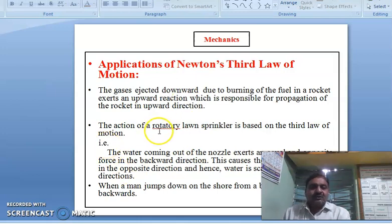The action of the rotary lawn sprinkler, you know sprinkler, it is utilized to sprinkle the water on the ground. Let's discuss again. The action of a rotary lawn sprinkler is based on the third law of motion. See how the water coming out of the nozzle exerts an equal and opposite force in the backward direction. Because of this what happens, this causes the sprinkler to rotate in the opposite direction. Hence water is scattered in all directions uniformly. So this is very best example of Newton's third law of motion.